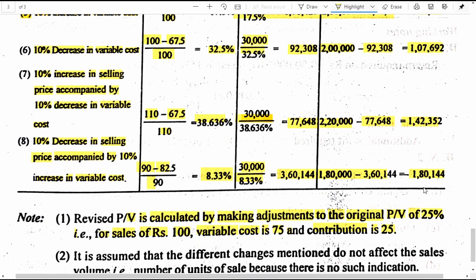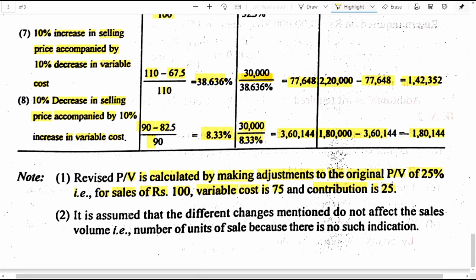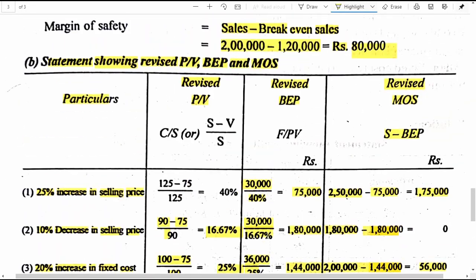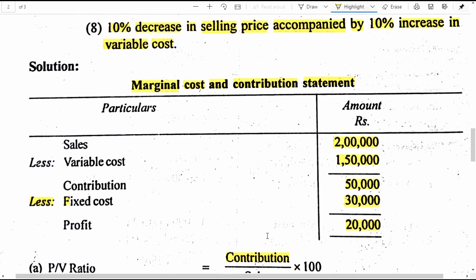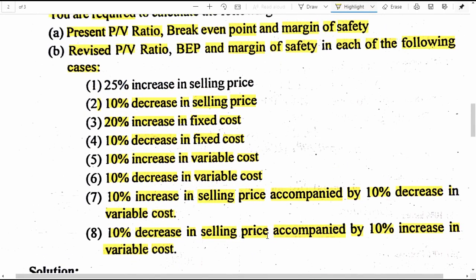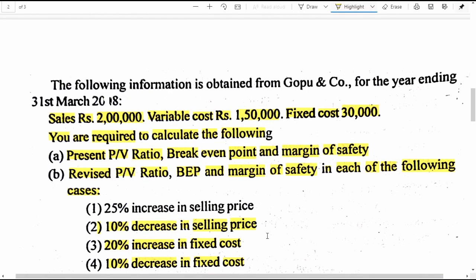For situation 8, actual sales is 1 lakh 80,000 rupees (2 lakh reduced by 10 percent). Margin of safety is 1,80,000 minus 3,60,144, giving a negative margin of safety of 1,80,144 rupees. A note states that sales volume is assumed unchanged throughout, as no information about change in sales volume is given in the problem. I hope you have understood the explanation. Thanks for your time to watch this video. I will meet you in another video, bye for now everyone.